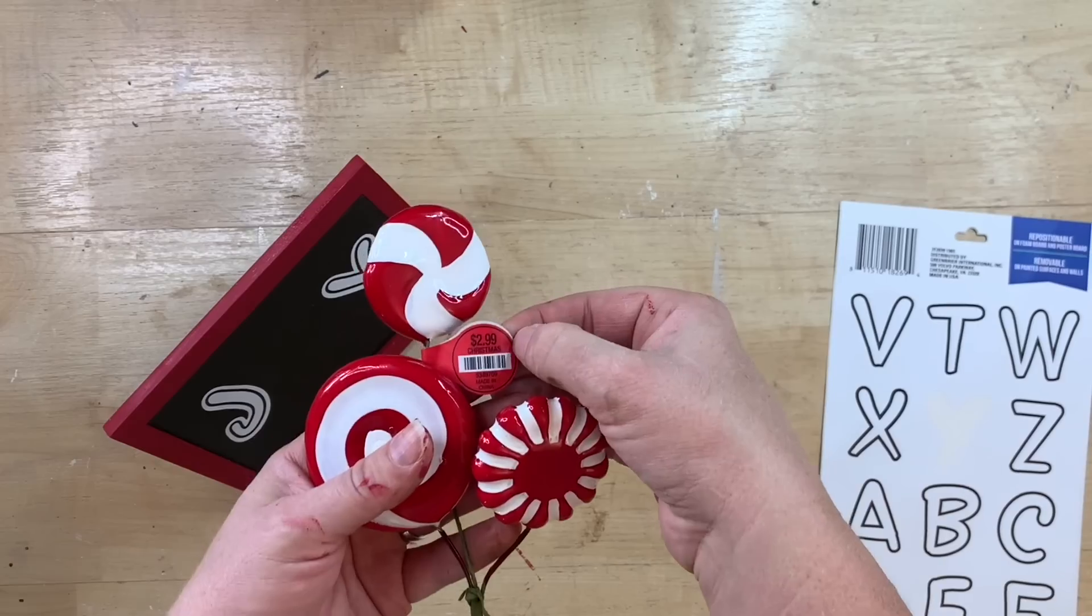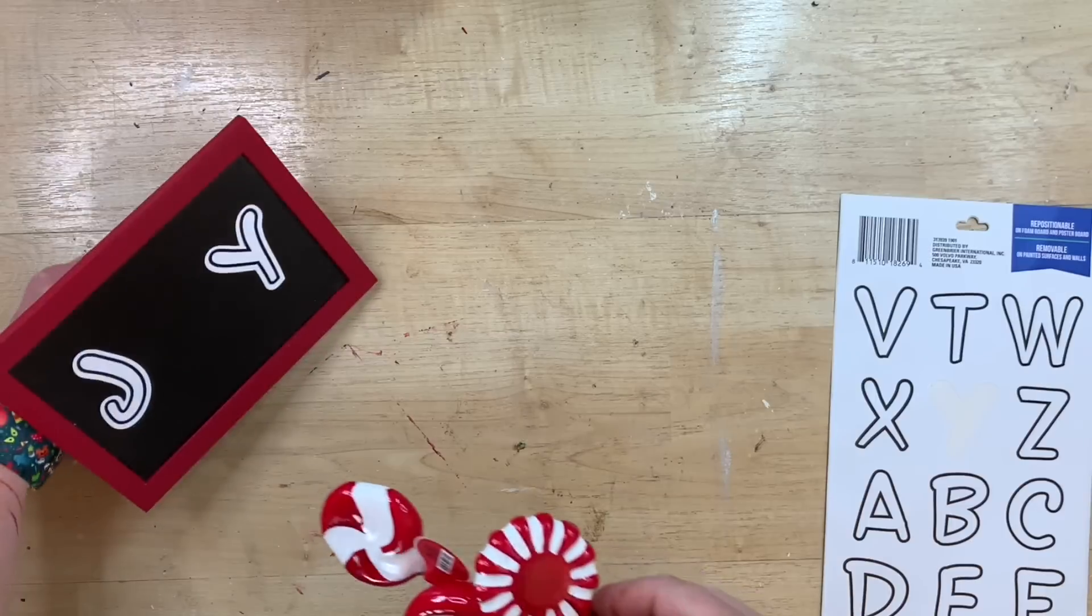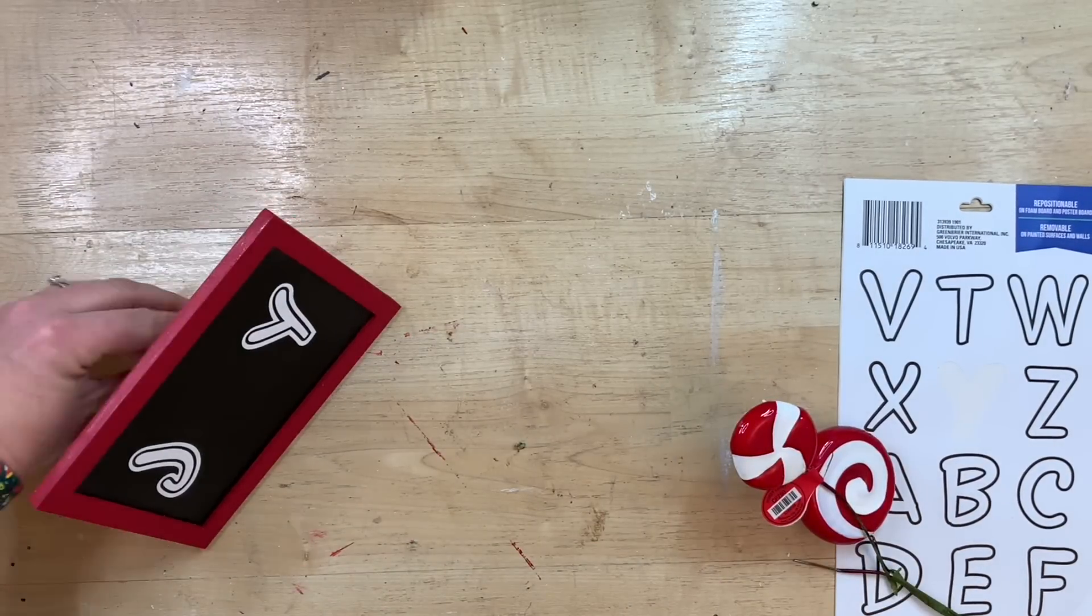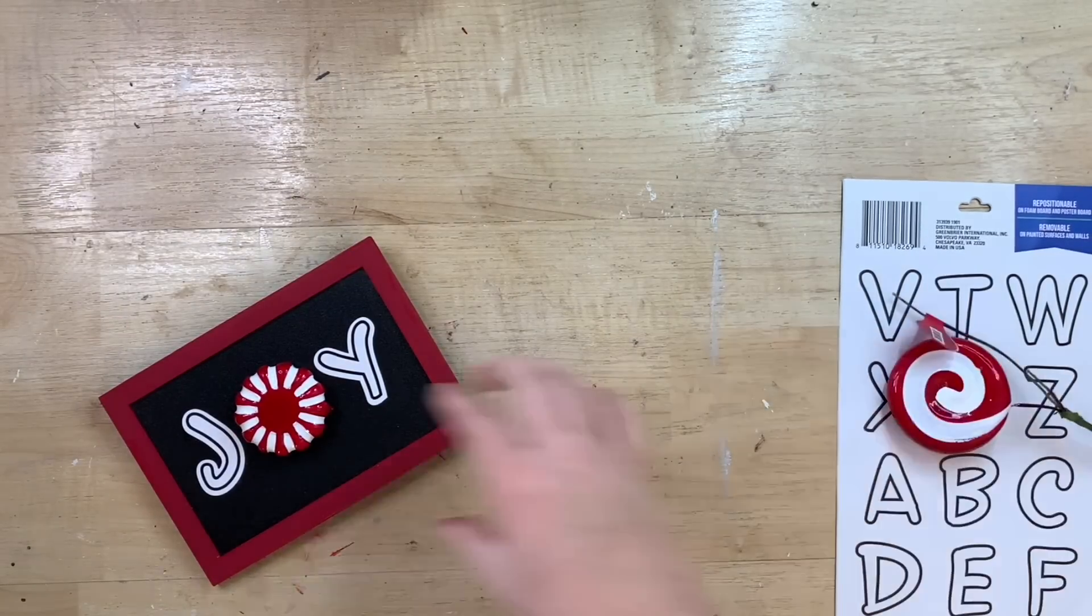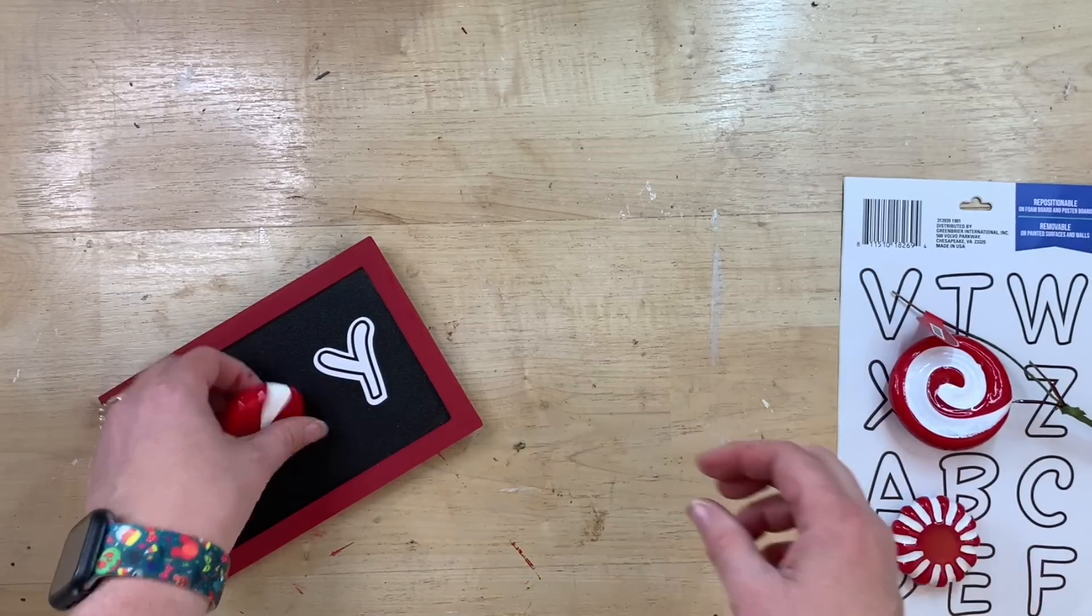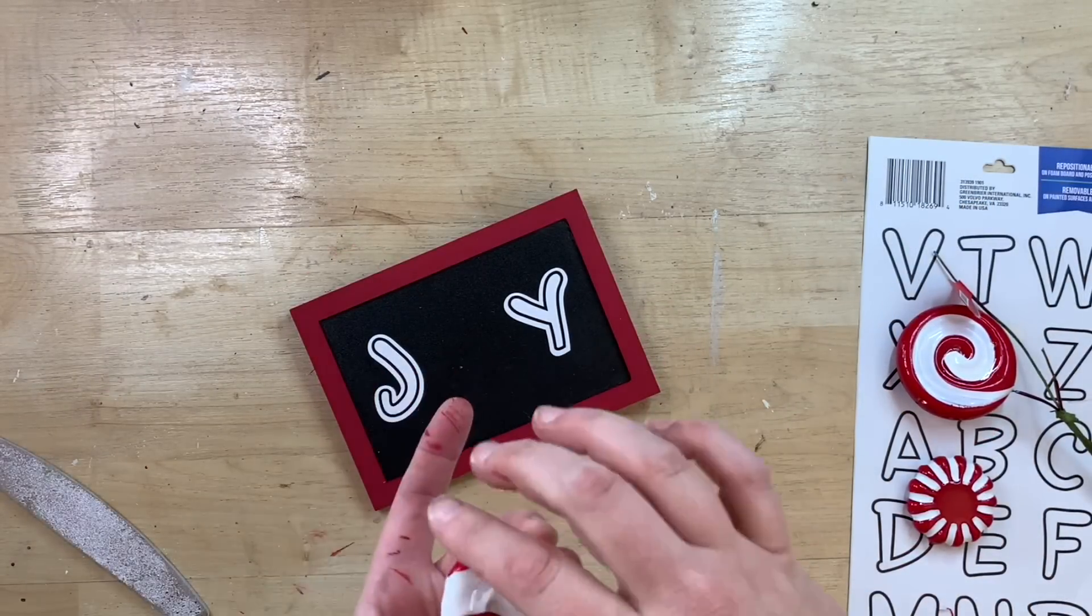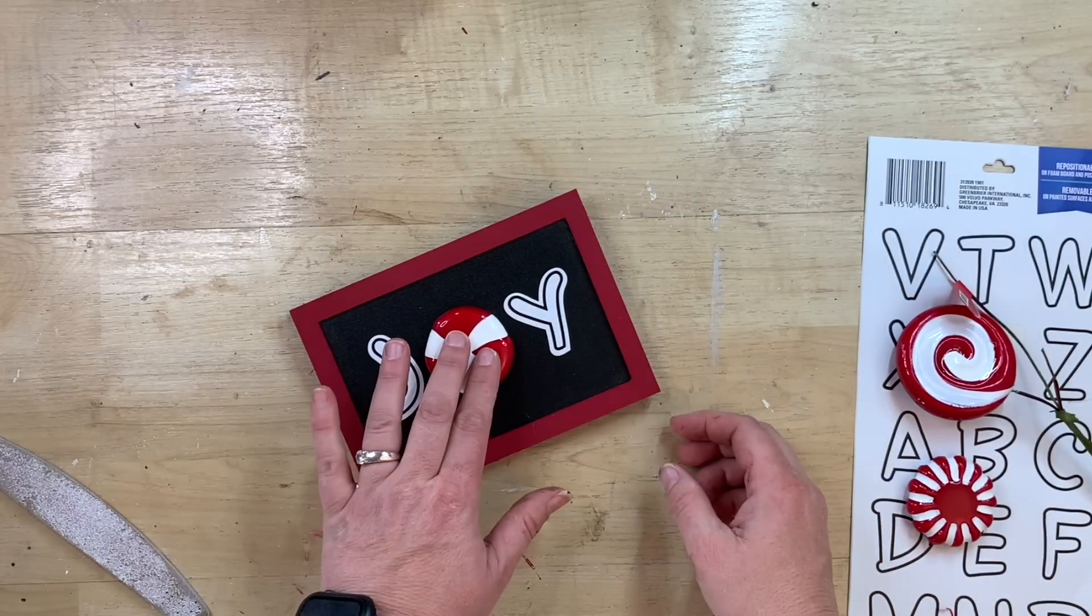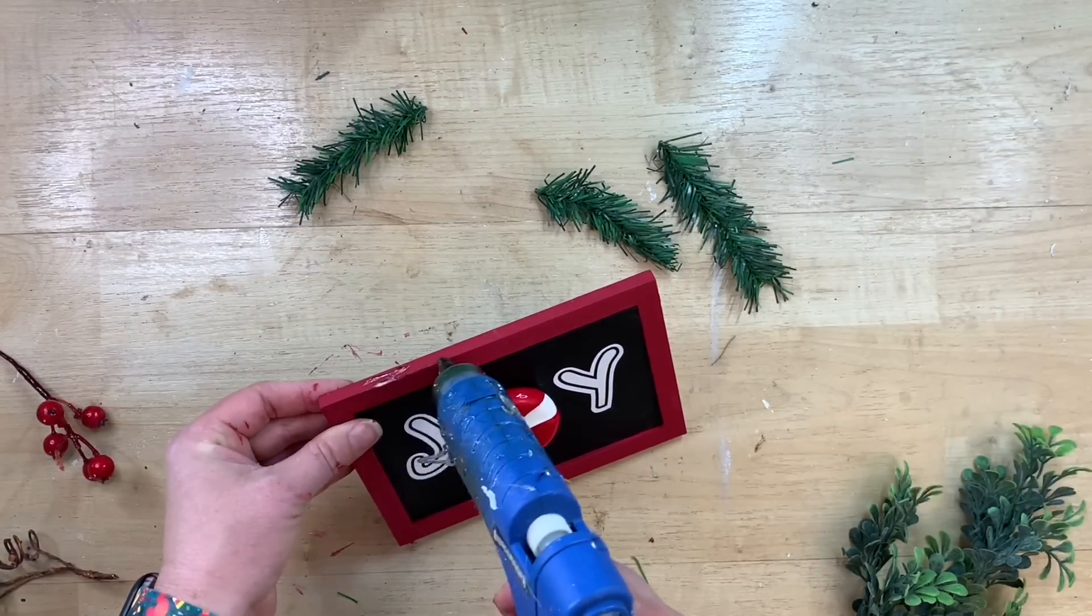But I thought these letters looked really cute on this chalkboard here. So I'm just using a J and a Y and I have these little peppermint, it's a little sprig or floral pick that I got from Hobby Lobby. I bought it when it was 50% off. So it was like a dollar fifty and I'm just deciding which one I liked the best. And I ultimately decide on this one right here. I thought that looked like a classic peppermint candy there and just using some hot glue. I will just glue that in the middle to make the word joy. I just think that that is so cute. I love that.